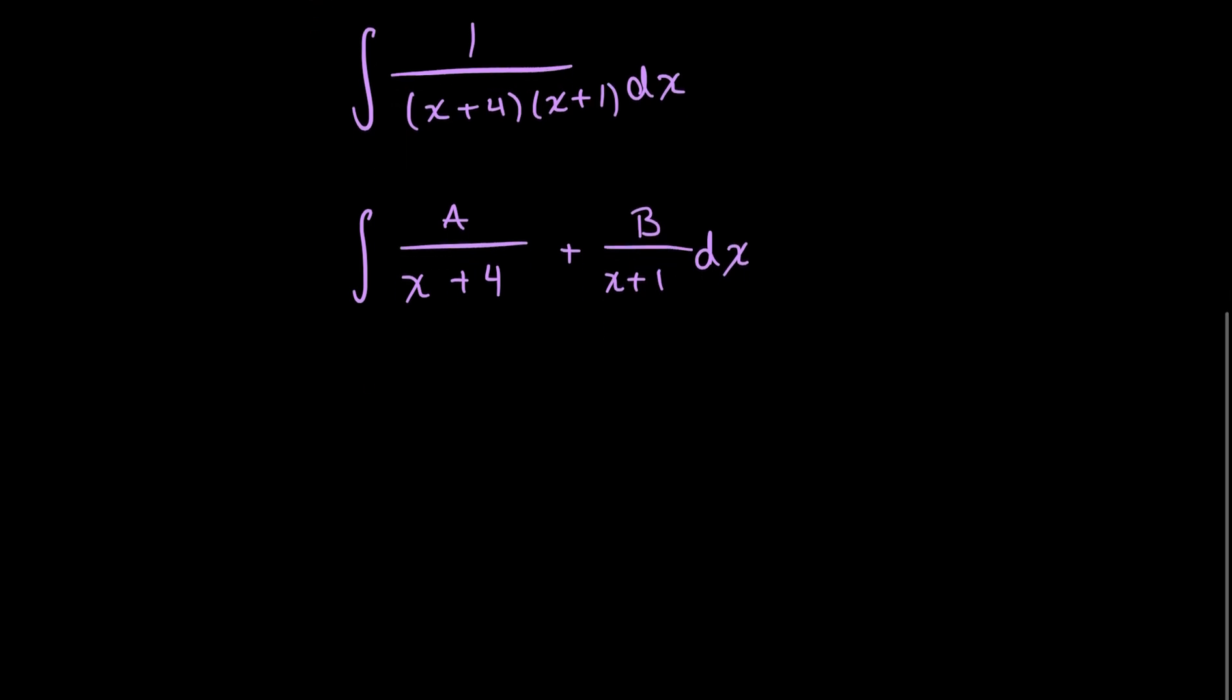So I end up getting a times x plus 1, x plus 1 plus b times x plus 4, all over the same denominator of x plus 4 times x plus 1.